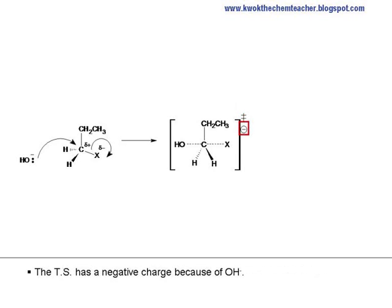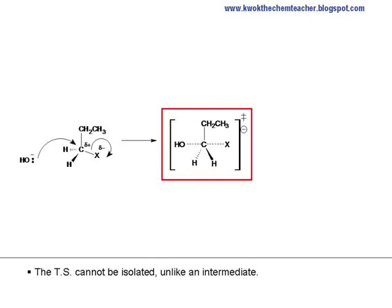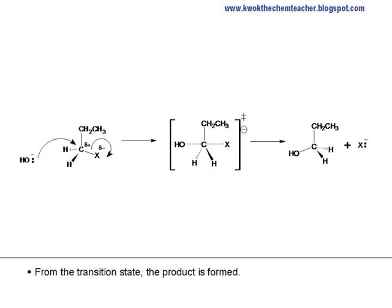The transition state has a negative charge because of OH minus. The transition state cannot be isolated, unlike the intermediate. From the transition state, the product will be formed.